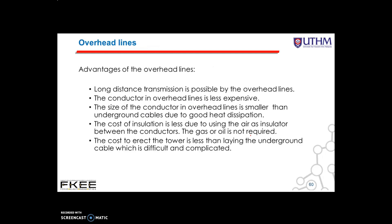The advantages of overhead lines are: long distance transmission is possible; the conductor in an overhead line is less expensive; the size of the conductor is much smaller compared to underground cables due to good heat dissipation; the cost of insulation is less since air is used as the insulator between conductors; gas or oil is not required; and the cost to erect the tower is less than laying underground cables, which is very difficult and complicated.